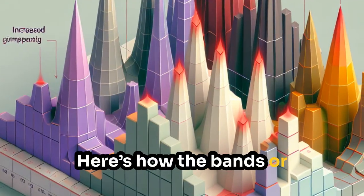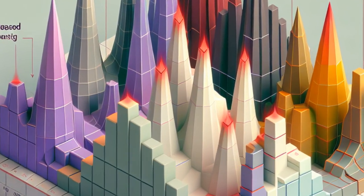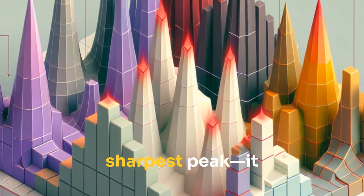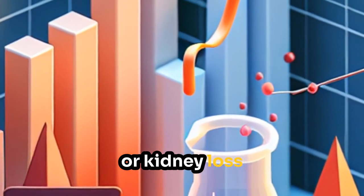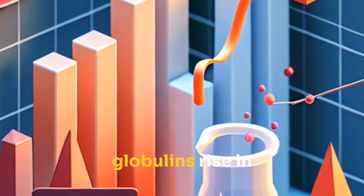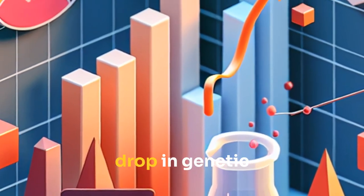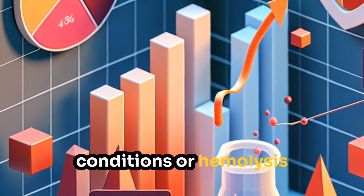Here's how the bands or peaks are interpreted. Albumin is the tallest, sharpest peak. It drops in liver disease, inflammation, or kidney loss. Alpha-1 and alpha-2 globulins rise in inflammation but drop in genetic conditions or hemolysis.